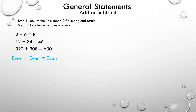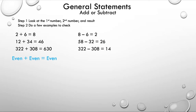Now let's look at subtraction: 8 minus 6 equals 2. Let's do another example to check: 58 minus 32 equals 26. And one more with different types of numbers: 322 minus 308 equals 14. We've done different examples with different numbers, and now we can create a general statement: even minus even is equal to even. Remember, a general statement is always true — if you always do even minus even, you get an even number.